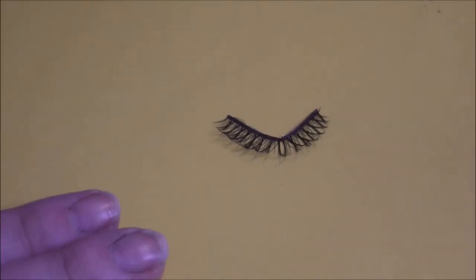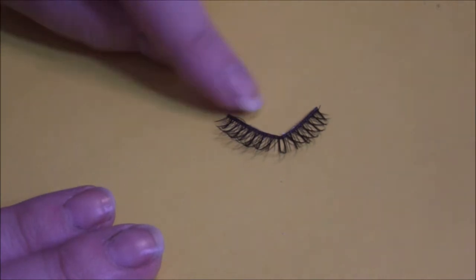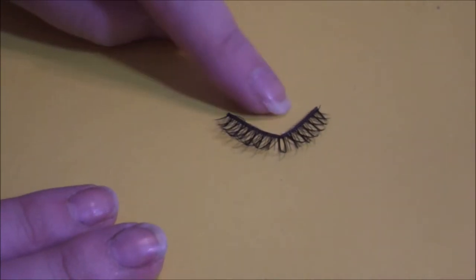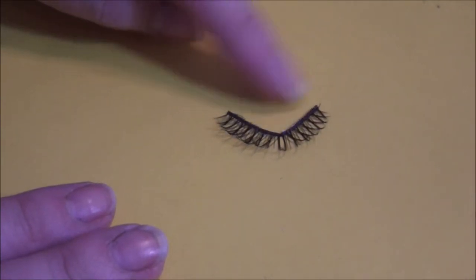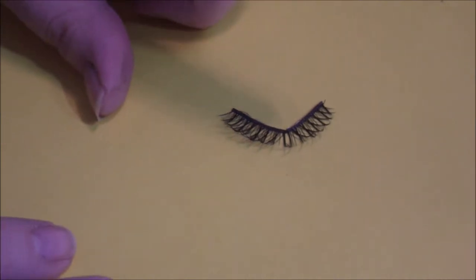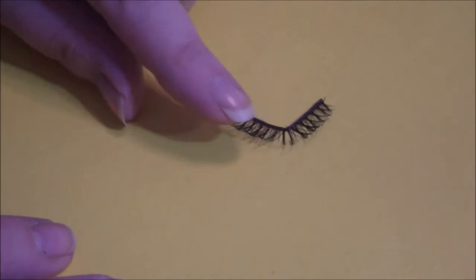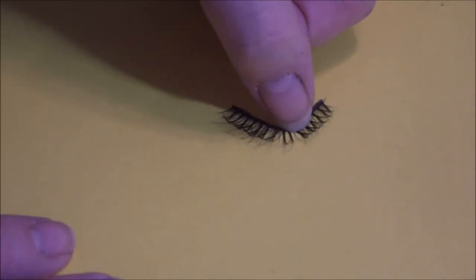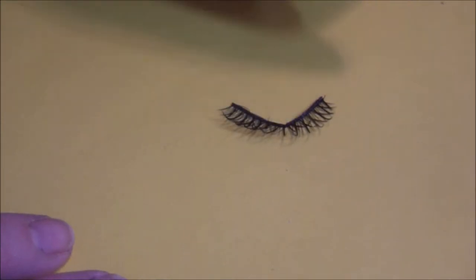So here I have the lash on a piece of paper and I just used a little bit of adhesive that was already on it to attach it to the plastic part to stick it onto the paper, just so it'll hold its shape and doesn't completely go out of bounds.